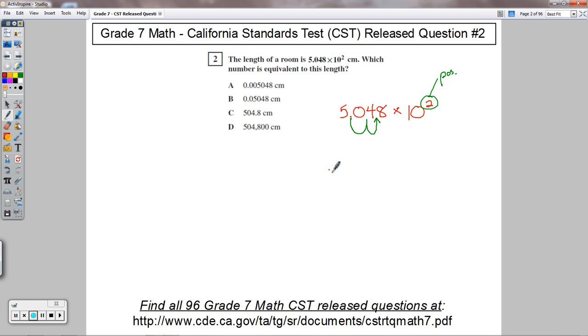And that gives me 504.8. Then I take care of the 10 squared, the 10 to the second power. This is in centimeters, and this is my final answer—choice C.